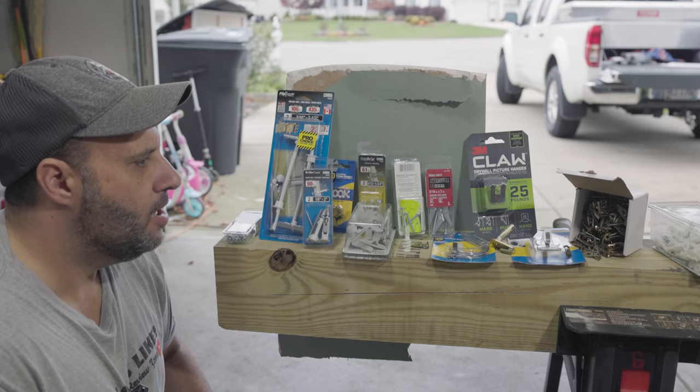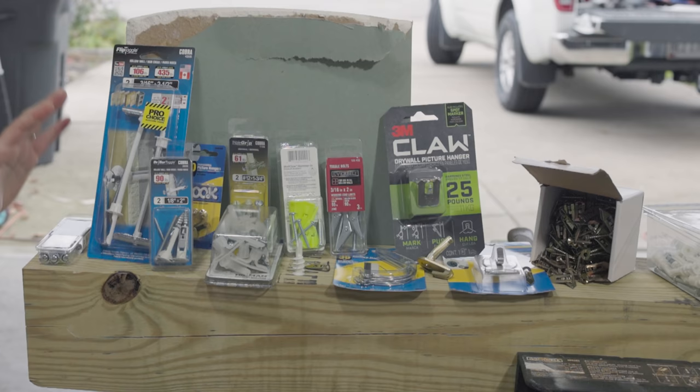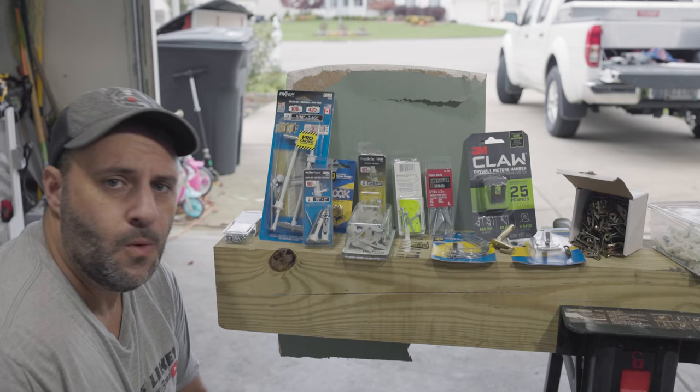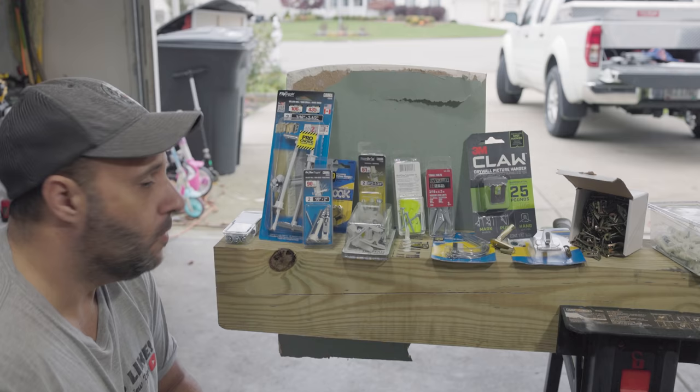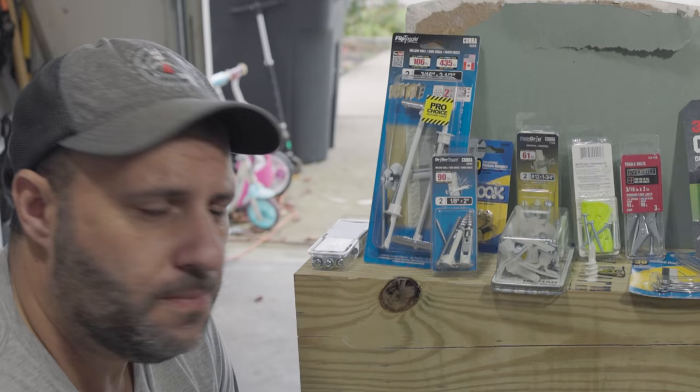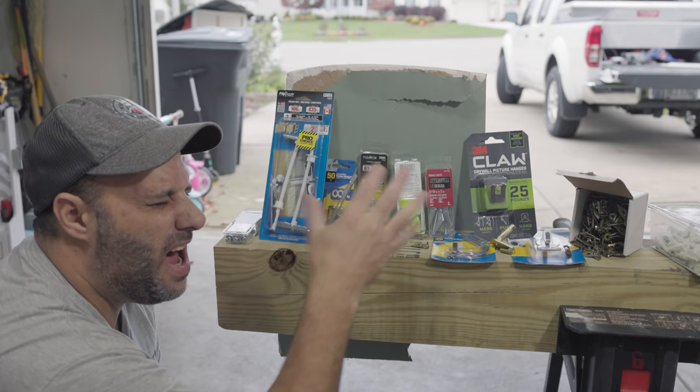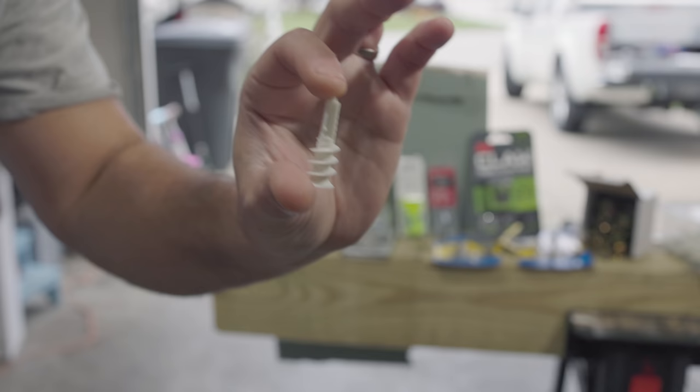So we got all different type of anchors here. We got drywall anchors, monkey hooks, toggles, claws. We got some that you will need a drill for, some that you'll need a hammer for, and some that you won't need any tools for. But let me close my eyes and see which one we're going to go with first. Sharp. We're going with this one.